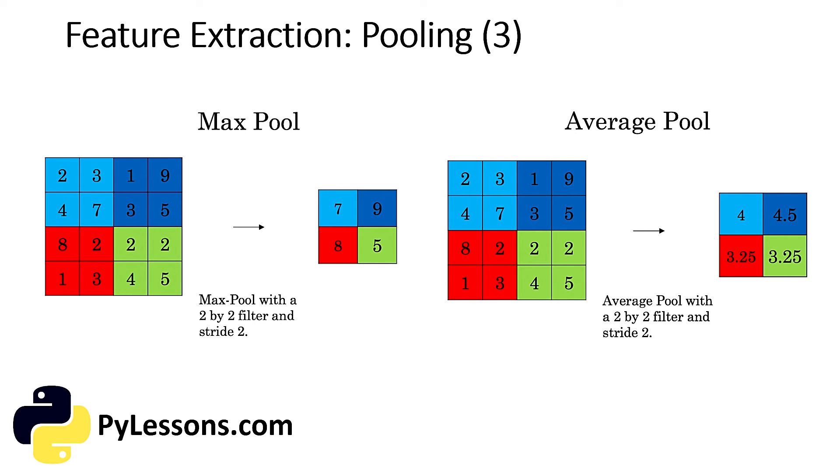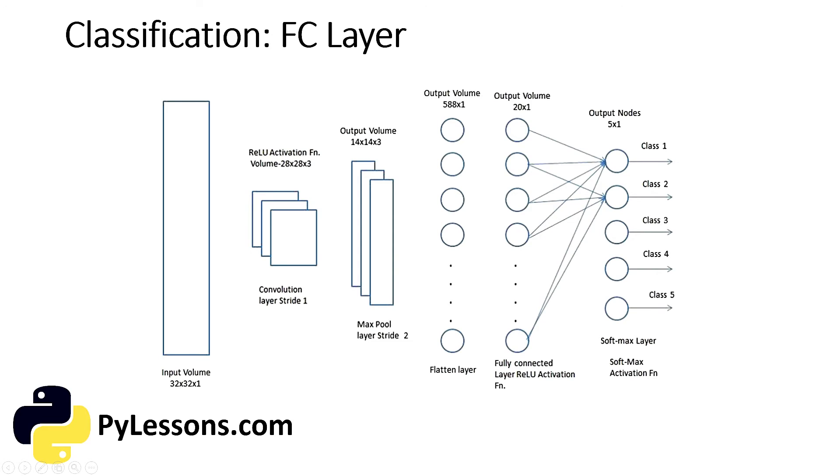After going through the process, we have now successfully enabled the model to understand the features. Moving on, we are going to flatten the final output and feed it to a regular neural network for classification purposes. Adding a fully connected layer is usually a cheap way of learning non-linear combinations of the high-level features as represented by the output of the convolutional layer. The fully connected layer is learning a possibly non-linear function in that space. Here is a simple convolutional neural network example.